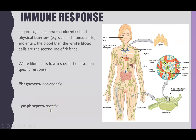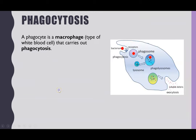Lymphocytes are going to be coming up in the next two videos on cell-mediated and humoral response, which I'll link once they're made. So the phagocytes is what we're looking at today and they conduct phagocytosis. A phagocyte — another name is a macrophage — and that's the type of white blood cell they are. They carry out phagocytosis and you find them naturally occurring floating around in the blood, but also within your tissues and cells.